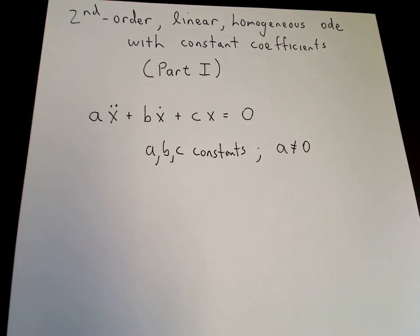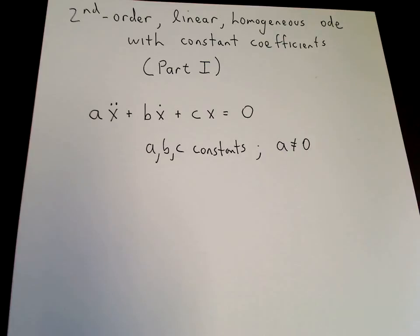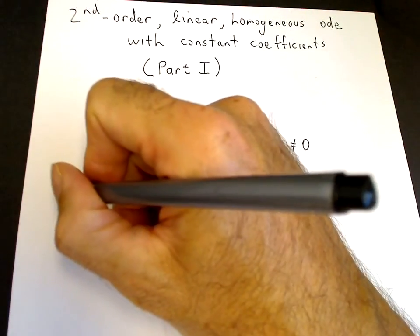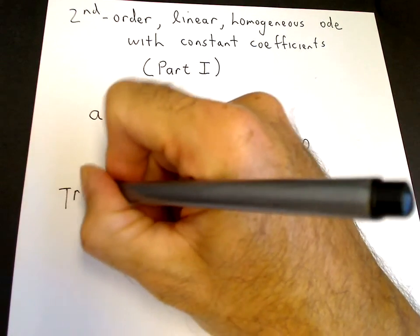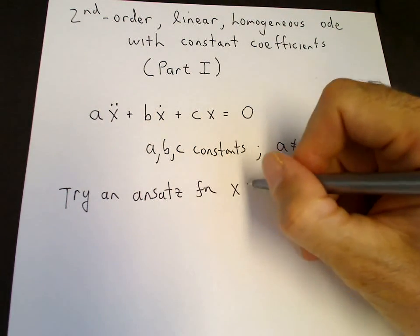So how do we solve this second order equation? The method we use is essentially guessing the form of the solution. We're guessing a solution that still has some free parameter associated with it, in order to come up with an equation to determine that free parameter. That type of guess is called an ansatz — it's a German word — and we want to take an ansatz for x.